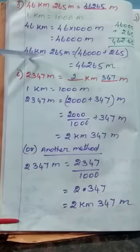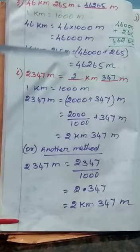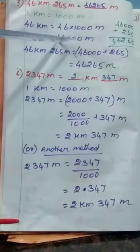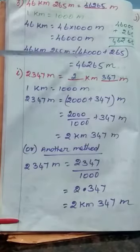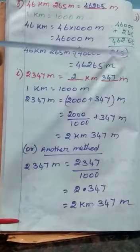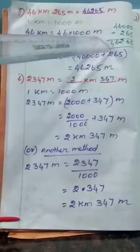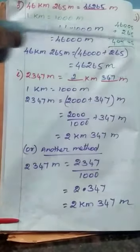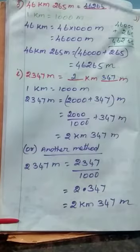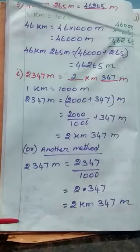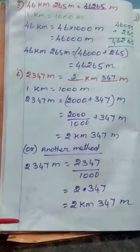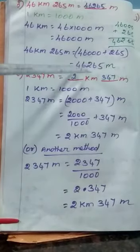Now write the question: 46 kilometer 265 meter. Instead of 46 kilometer, write 46,000 meter. So you have 46,000 plus 265. Add these two numbers in the rough column: 46,000 plus 265. Zero plus 5 is 5, zero plus 6 is 6, zero plus 2 is 2, then 6 and 4. So the answer is 46,265 meter. Write this answer in the dash.